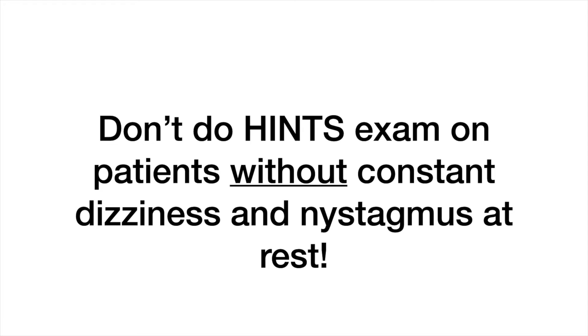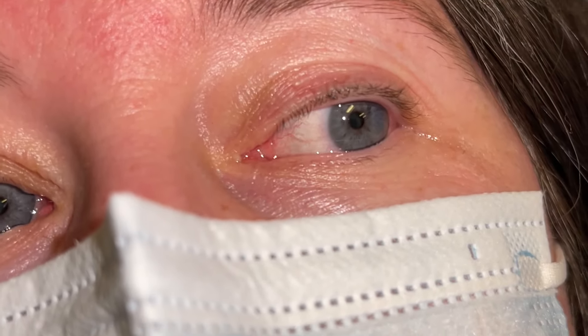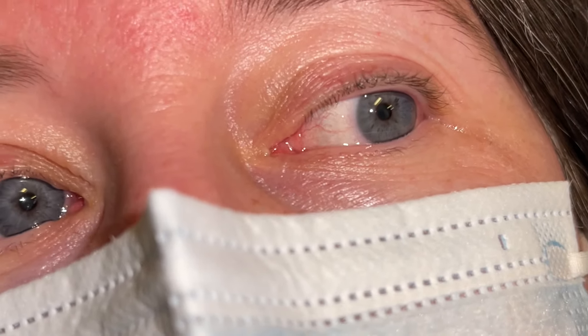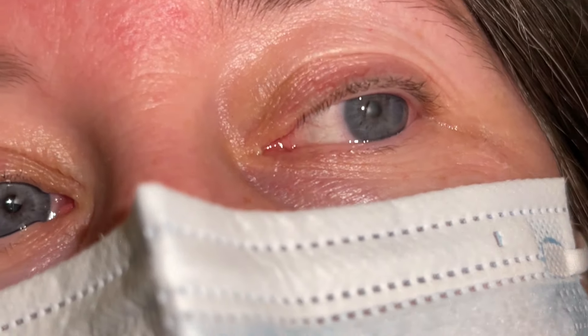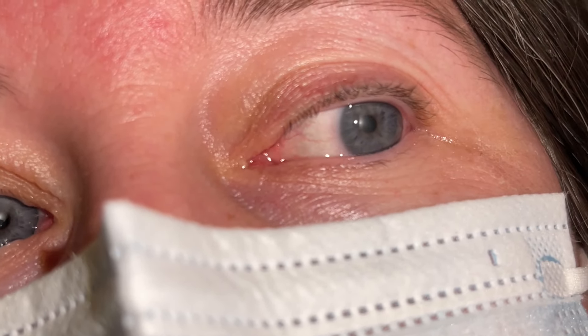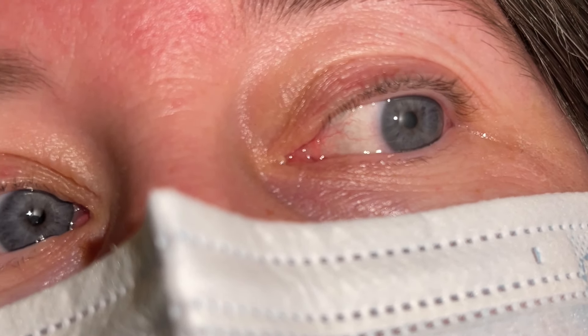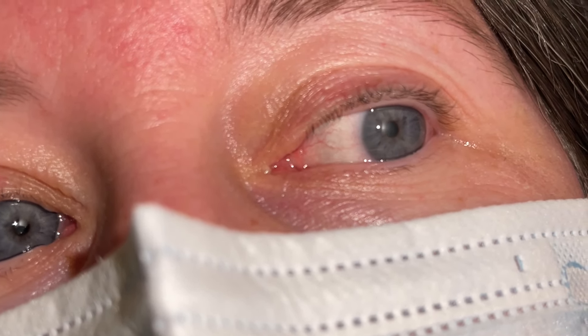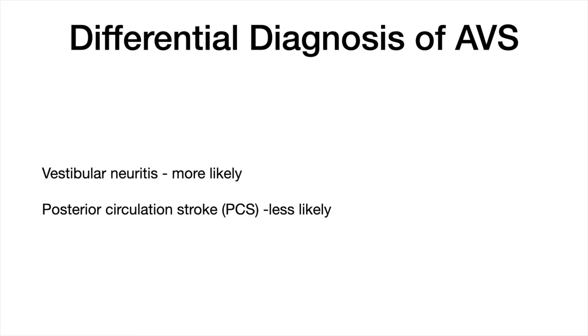Nystagmus in patients with vestibular neuritis can be as obvious as this woman who has horizontal nystagmus beating to the left, or maybe as subtle as this woman whose left-beating horizontal nystagmus was only clearly seen when she was asked to look 30 degrees to the left through a blank piece of paper.